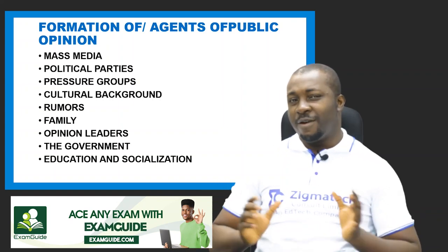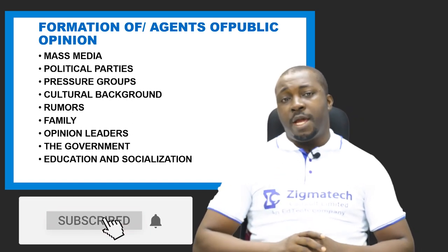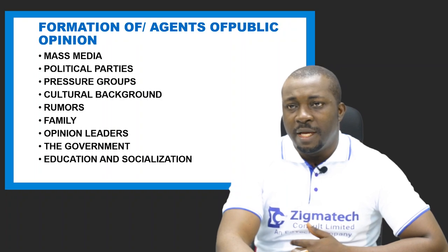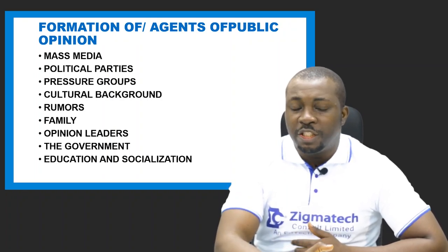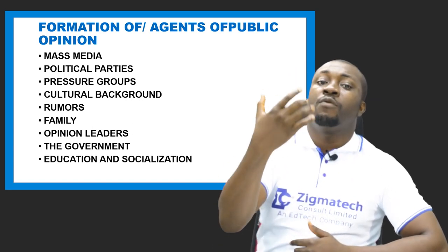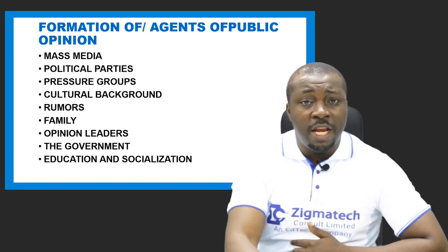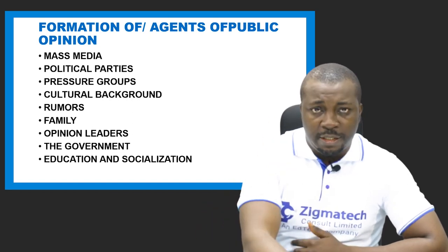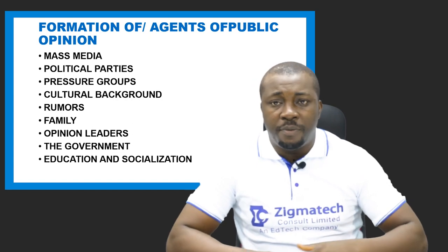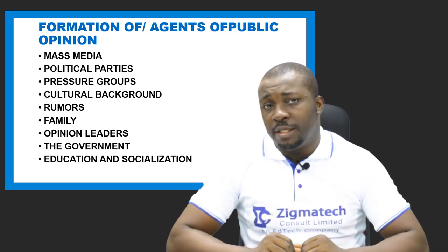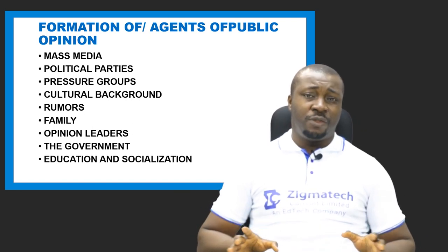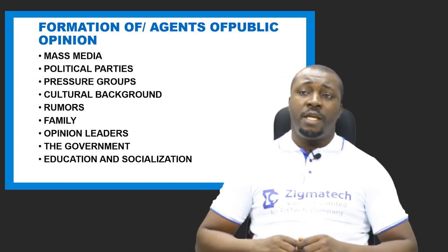Number eight is the government itself. When government makes policies, the agencies and ministries responsible for implementing those policies go and educate the public, making them understand and sympathize with the policy. Government does not come up with any law or policy without educating people through its agencies, attracting their sympathy and getting them to key into its policies. So government is one of the major agents of public opinion.